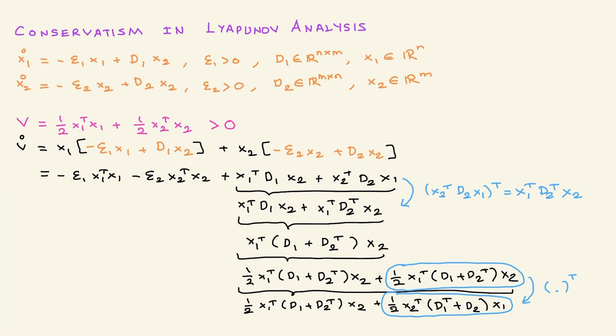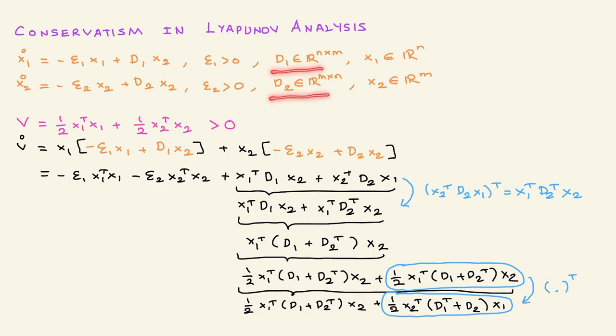I would like to do this within the context of an example without loss of generality, so the steps you learn can be applied to your own stability analysis. Consider two systems: x1-dot and x2-dot, where epsilons are positive and d1, d2 are matrices of appropriate dimensions. I will consider this Lyapunov function candidate: one-half x1-transpose x1 plus one-half x2-transpose x2, which is certainly positive definite.